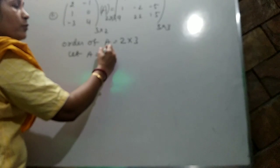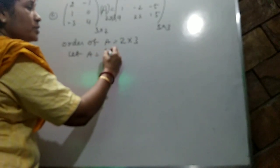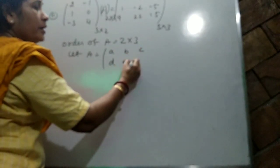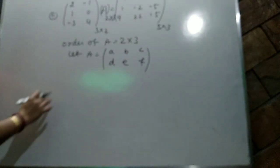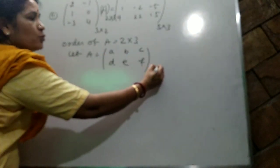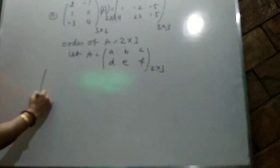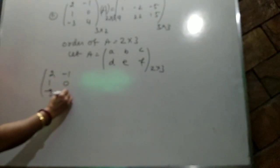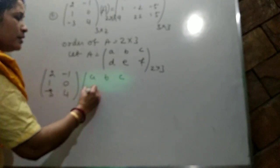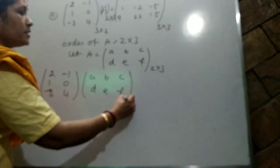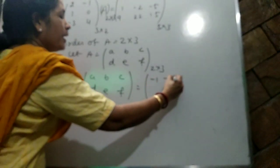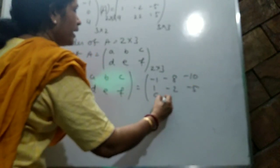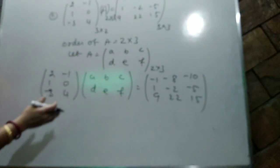Let A equal [a,b,c; d,e,f] (order 2×3). Multiplying out row by row: first row gives [2a-d, 2b-e, 2c-f], second row gives [a, b, c], third row gives [-3a+4d, -3b+4e, -3c+4f]. Setting this equal to the right-hand side matrix.